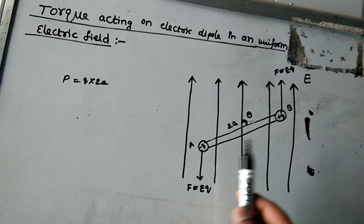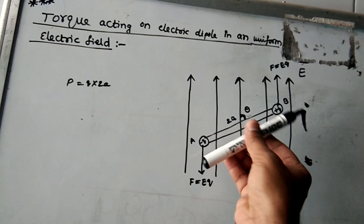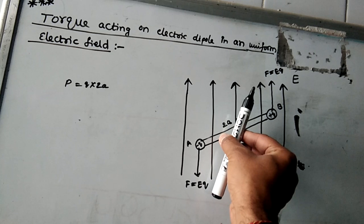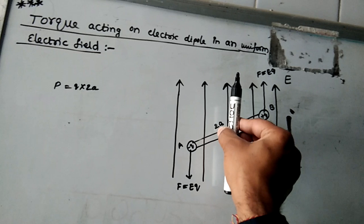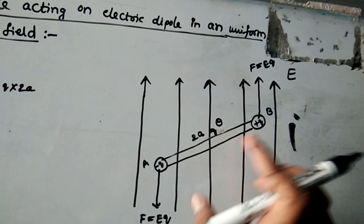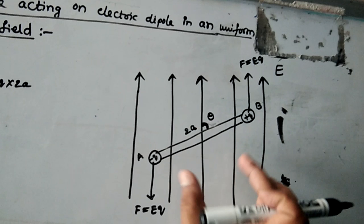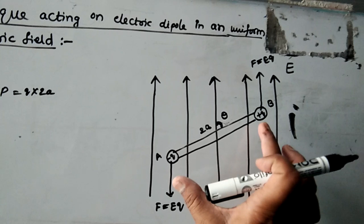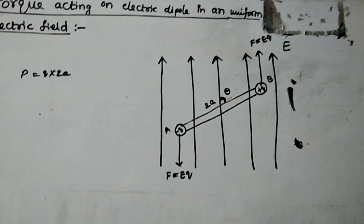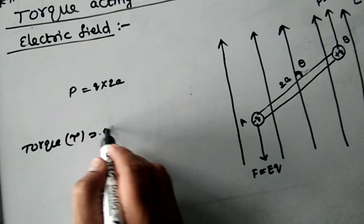One force tries to move the positive charge in the direction of the electric field, and the other tries to move the negative charge opposite to it. Together, they try to bring the dipole into alignment with the electric field. These two equal forces acting at two different points create a turning effect, which is called a couple, and the turning effect is called torque.